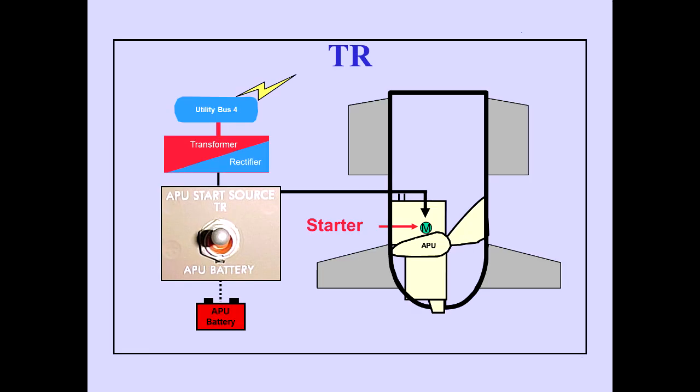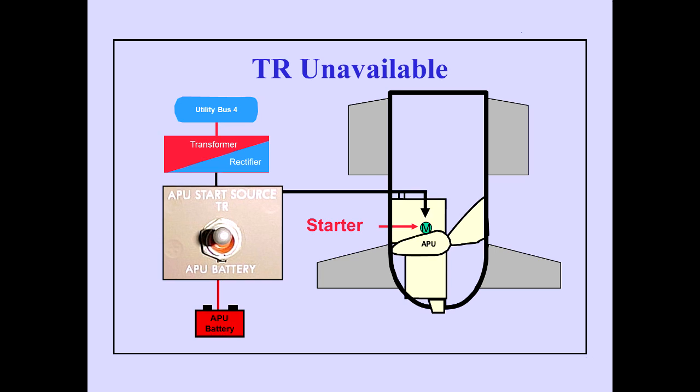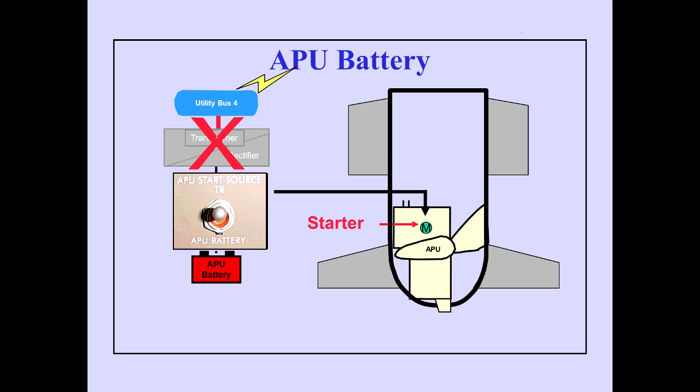With the start source switch in TR, the transformer rectifier automatically provides power for APU starting whenever utility bus 4 is powered. With the start source switch in TR and the transformer rectifier unavailable, starter power is automatically supplied from the APU battery. The APU battery position selects the APU battery and is used for start if the transformer rectifier fails.